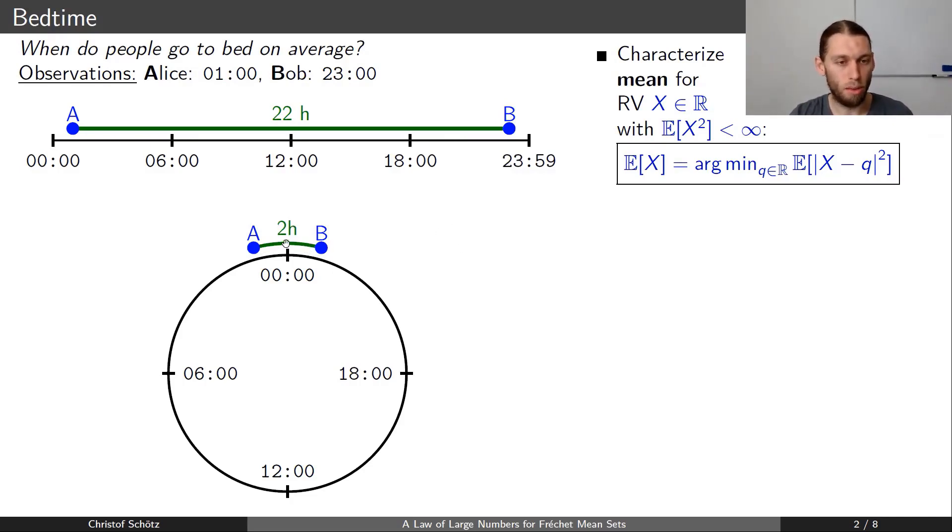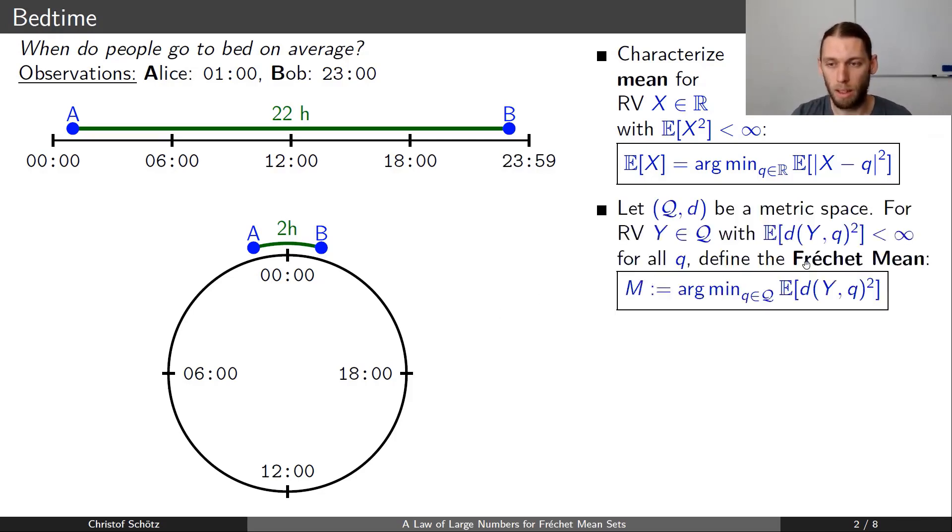Now we want to use this different distance below here to also define a mean value, and the Fréchet mean is exactly what we need. This is a general definition, so we have a general metric space (Q, d). Now for a Q-valued random variable, we define the Fréchet mean as the elements of the metric space that minimize the expected squared distance to the random variable.